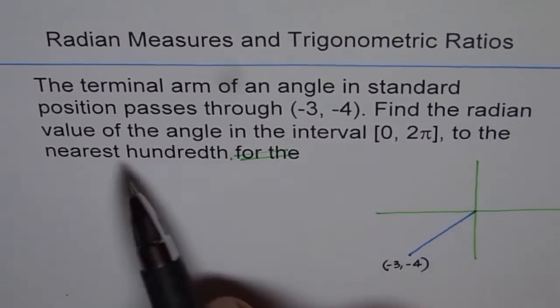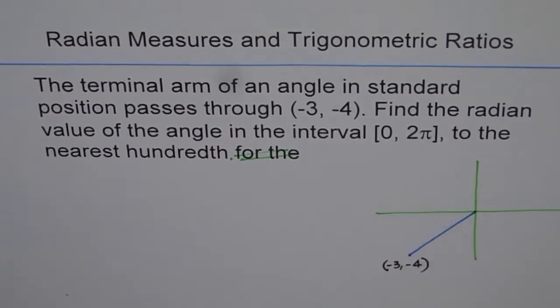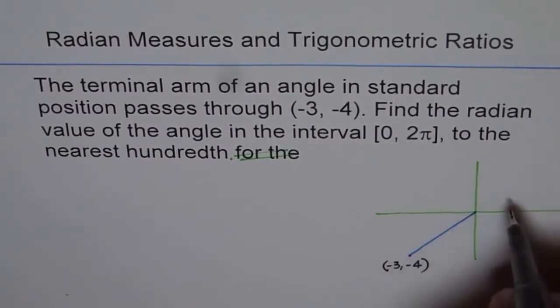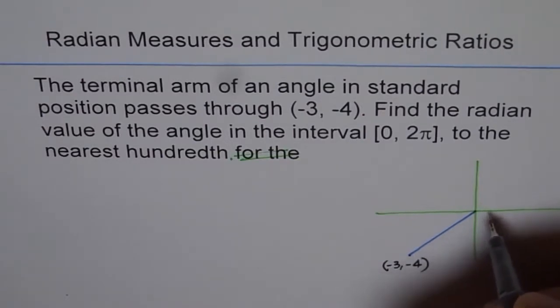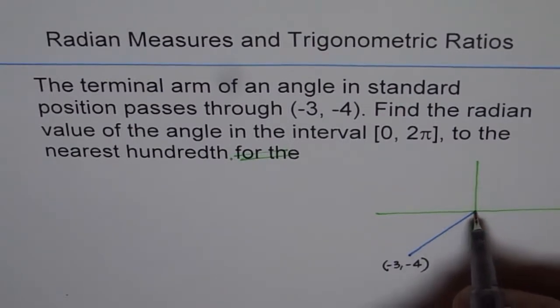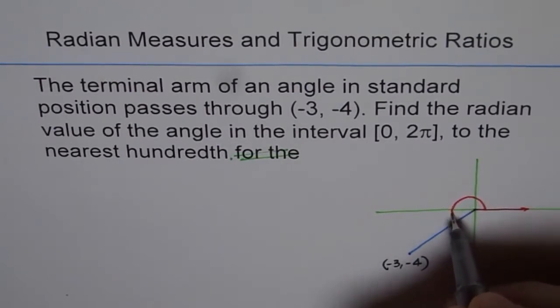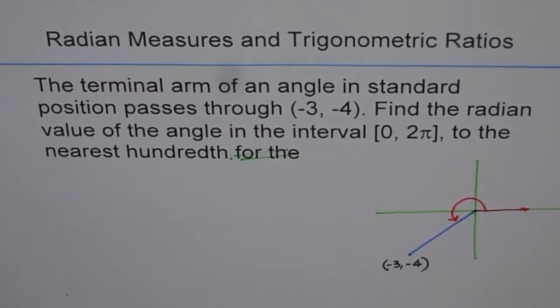Find the radian measure of the value of the angle in this interval [0, 2π]. That means one full circle within that. So when we say in standard position that means initial arm is always along the x-axis. So that's the initial arm, right. So that is the angle which we want to find. How much is this angle?